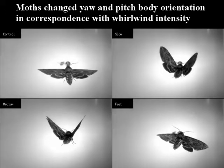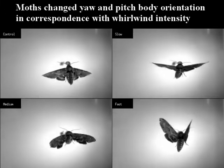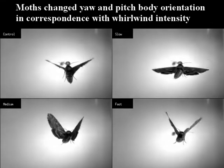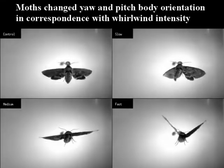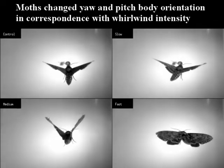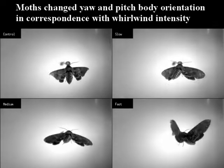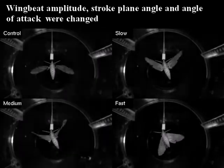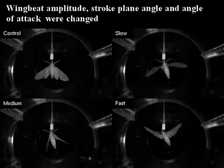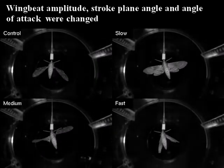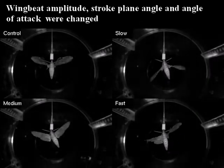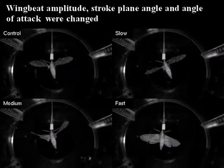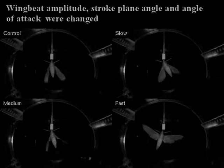The moths have a graded response of body and wing motion to the whirlwind intensities. The principal corrective action is best viewed from below, where you can see that the moths have an asymmetric left-right change in the long axis twist angle of the wing, and that provides the torque that's necessary for the moth to stabilize against this continuous vortex flow, causing it to twist in the air.